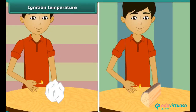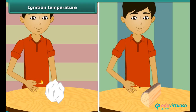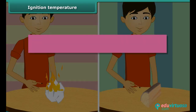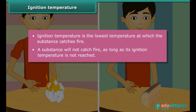We just saw that paper burns when lighted with a matchstick. Now bring the matchstick close to a piece of wood. The piece of wood does not catch fire. One lighted matchstick is not able to burn the piece of wood, but a piece of paper burned quickly. This is because the piece of wood has not reached its ignition temperature. Ignition temperature is the lowest temperature at which a substance catches fire.